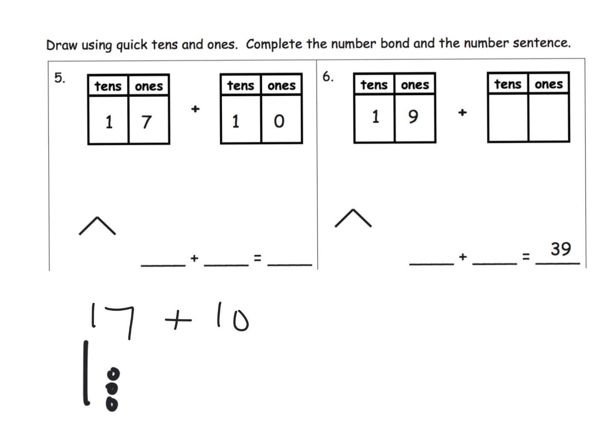and then we're going to have seven ones. One, two, three, four, five, six, seven. So there's our 10 and seven ones. And now to model the 10, it's a quick 10. Boom, done.